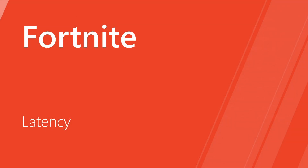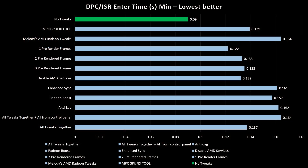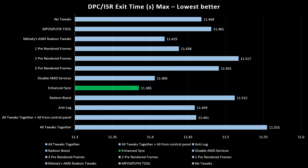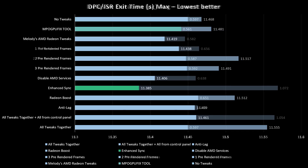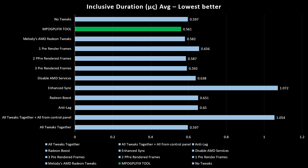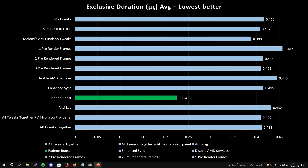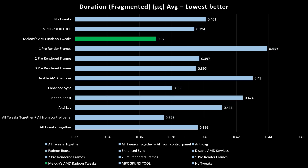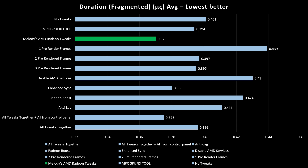In Fortnite latency, the DPC/ISR entry time was better without any tweaks. The DPC/ISR exit time was better with enhanced sync. The inclusive duration was better with the MPOGPUFIX tool. The exclusive duration was better with Radeon Boost. And the duration fragmented metric was better with Melody's AMD Radeon tweaks.